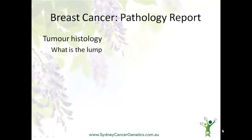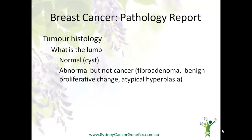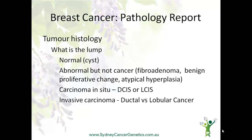Tumour histology is basically answering the question: what is this lump? Sometimes a lump may be normal, such as a cyst. Other times it may be abnormal, but still not a cancer. Some terms you may have come across — either in your own report or that of a family member — include fibroadenoma, benign proliferative change, and atypical hyperplasia. Sometimes there are very abnormal cells, but they are confined. This is referred to as carcinoma in situ, or DCIS, or LCIS. Invasive carcinoma describes cancer cells that have broken through the surrounding membrane, and this is usually described as either ductal or lobular cancer, depending on where these cells originated.